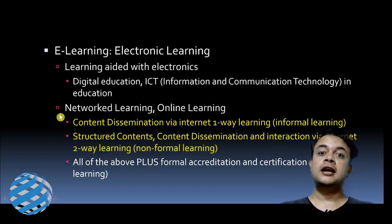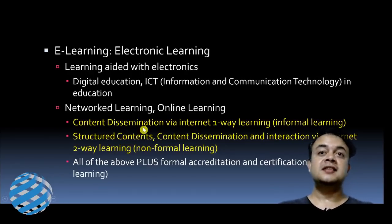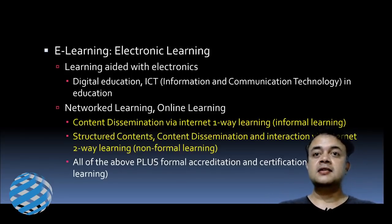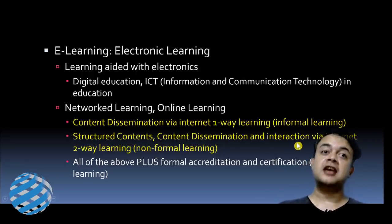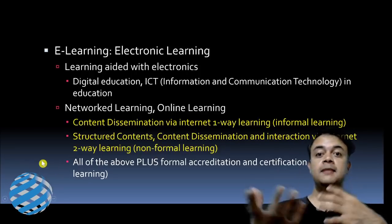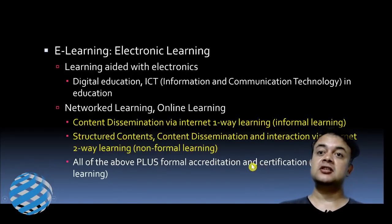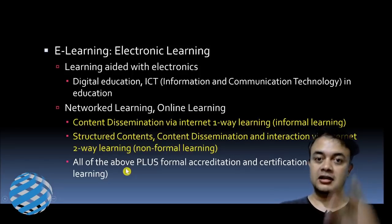Networked learning includes content dissemination via internet — that is one-way learning only for disseminating the content. There is also structured content dissemination and interaction via internet, which is two-way learning. And all of the above plus formal accreditation and certification is called formal learning. So we now have three modes of networked learning.